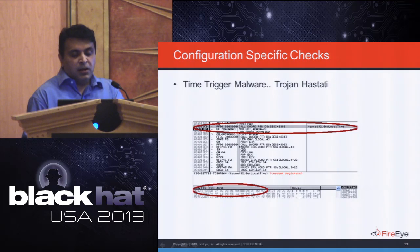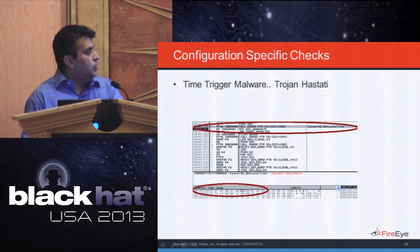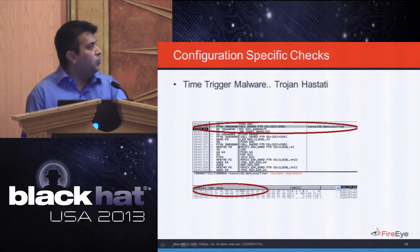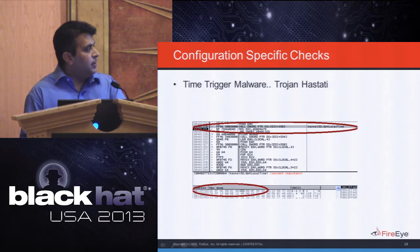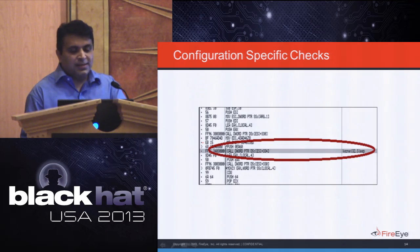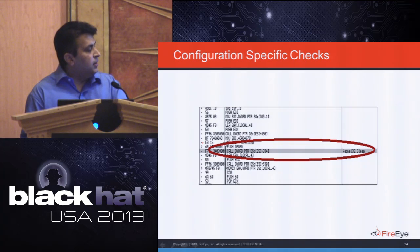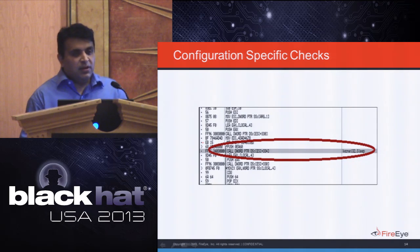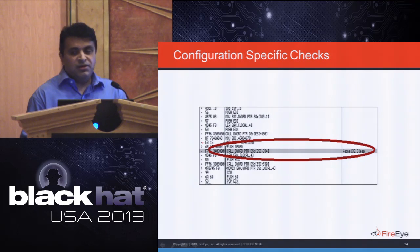Time triggers, or time bombs, are very specific samples. This particular sample was used to wipe out drives of computers in Korea. Its execution has two parts: first, it calls GetLocalTime to get the current time. If the current time is less than the detonation time, it sleeps for 60 seconds and checks again. The moment current time equals the detonation time, the sample executes. If dropped into a sandbox before detonation time, it won't execute.